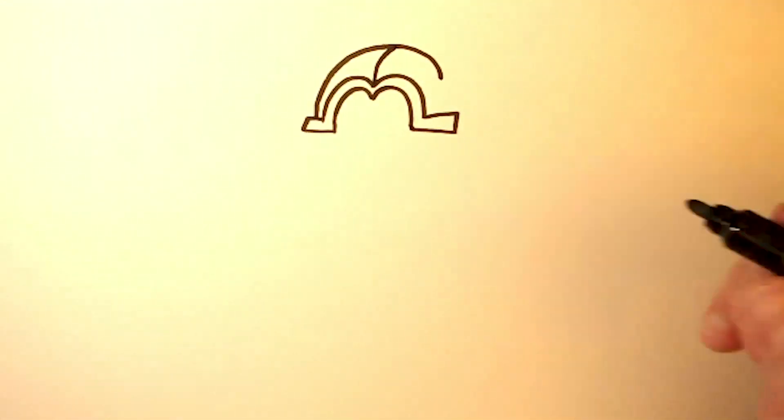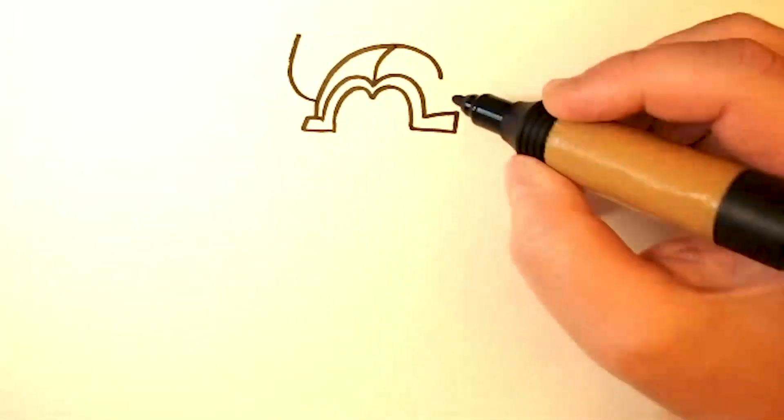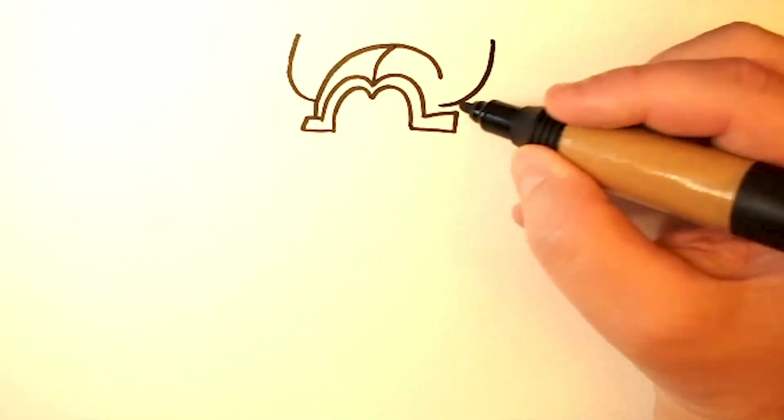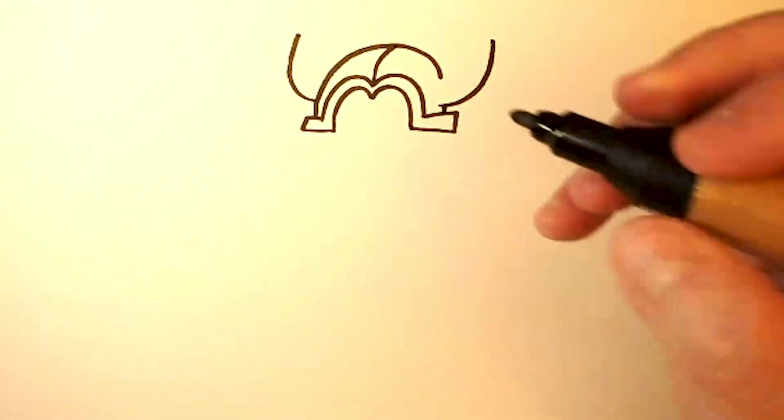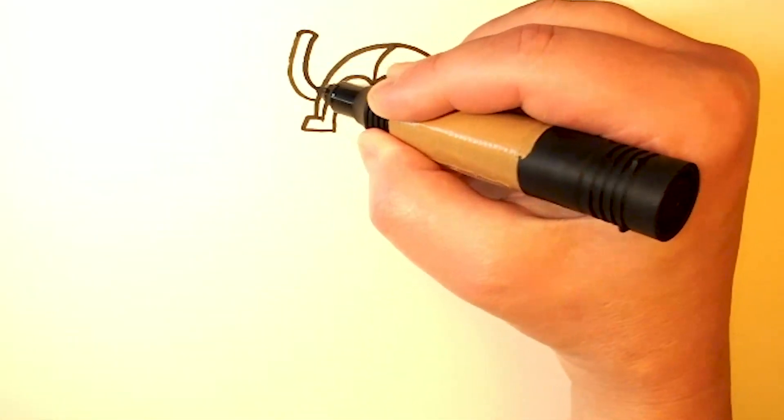And then this helmet has some tailpipes on either side, which are just curved lines. They go up like this, and this, and then we close them off at the top.